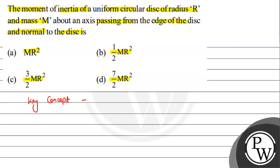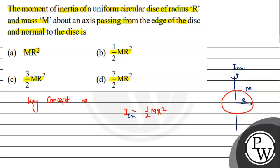Let's collect key concepts. First, look at the moment of inertia of the disk about an axis passing through the center and perpendicular to its plane. That is ½MR². So I_cm about the center equals ½MR², where R is the radius and M is the mass.